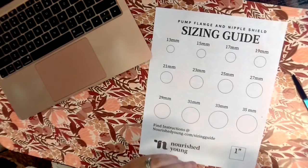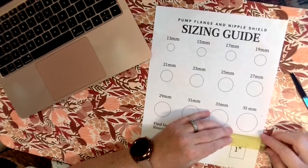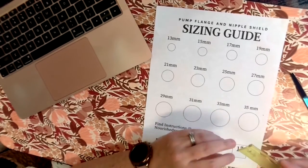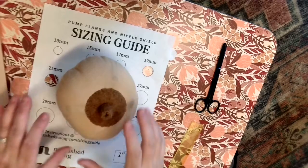Once you've printed, you want to make sure that this is accurate by using this one inch box on the bottom and a ruler. So take a ruler and measure both sides. They should both equal one inch and if they equal one inch that means the rest of the scale is set. If it doesn't, go back and print it again and check your print settings.